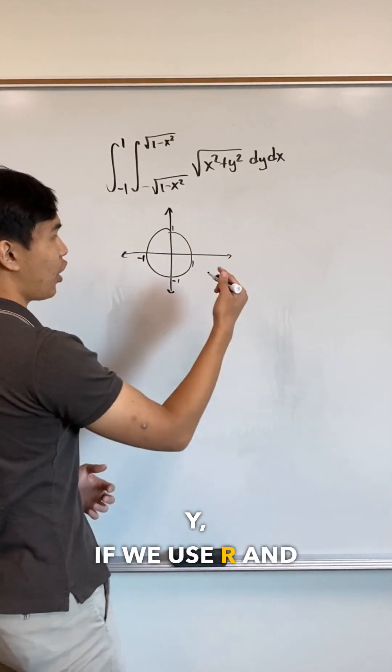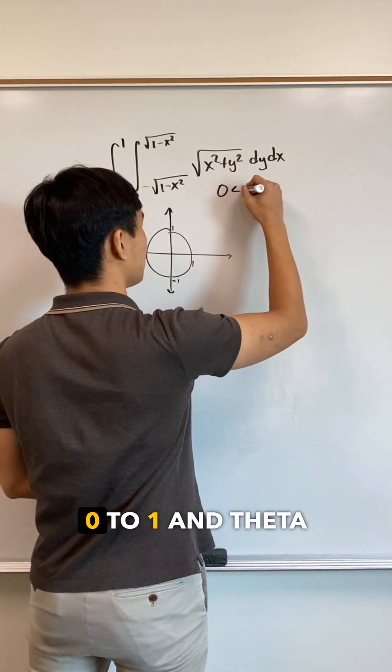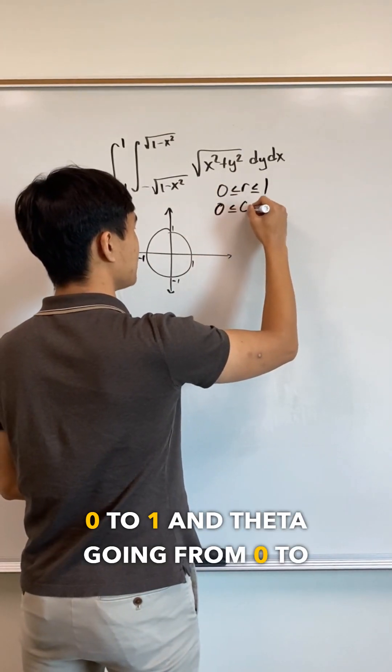Instead of x and y, if we used r and theta, our integration bounds would have r going from 0 to 1 and theta going from 0 to 2 pi.